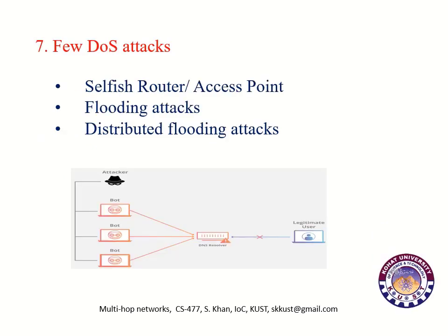Denial of service is a severe form of active attack in which network services are denied to legitimate users. There are many different types of denial of service attacks. Selfish router or access point: in this type of attack, the attackers target the router or access point. Once the router or access point is made selfish, legitimate users are not able to use network services such as the internet.